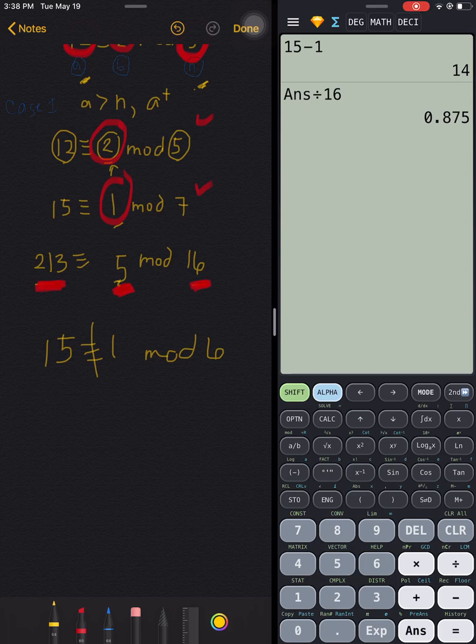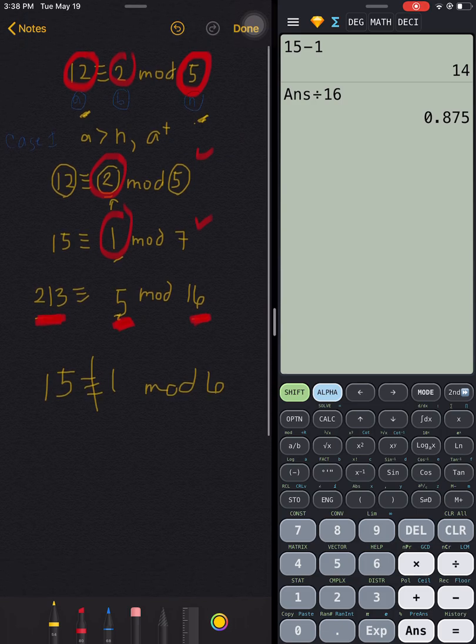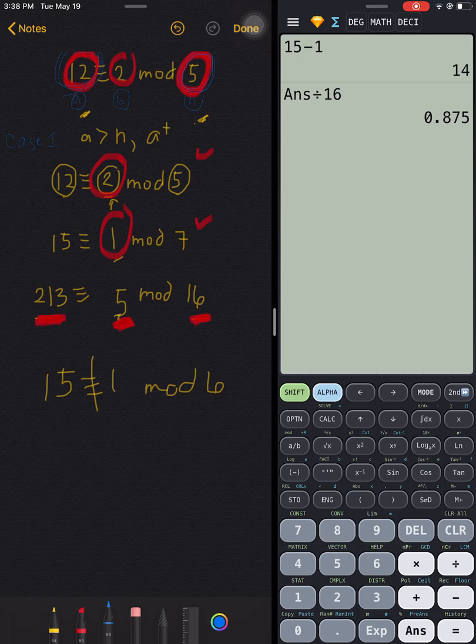So that's our first case in modular arithmetic—that is when our number A here, the leftmost number, is positive and is greater than the rightmost number here, which is our letter N. See you in my next two cases under modular arithmetic.